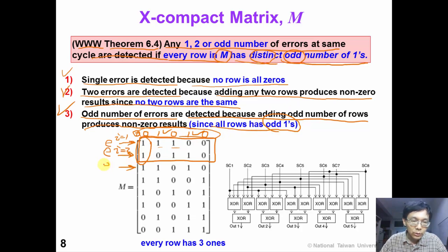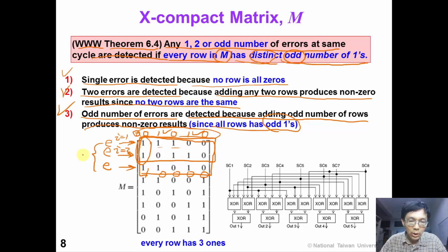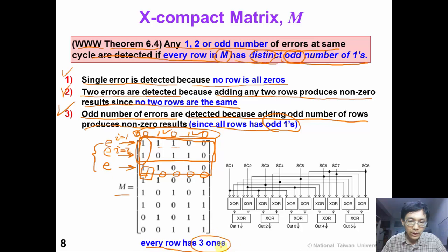For example, suppose we have three errors coming out from scan chains 1, 2, and 3. If we add these three rows together we get output 1, 0, 0, 0, 0. That means if we have three errors coming in from scan chains 1 to 3, at least we can detect the error at output 1. So in this M matrix, every row has an odd number of 1s — specifically three — so we are guaranteed to detect odd numbers of errors.